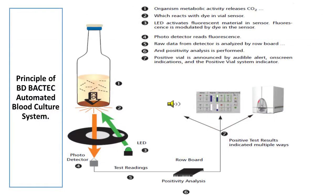The principle of the BD BACTEC automated blood culture system utilizes fluorescent technology in detecting the growth of organisms in blood culture bottles. When microorganisms are present in the cultured vials, they metabolize nutrients in the culture medium, releasing carbon dioxide into the medium.